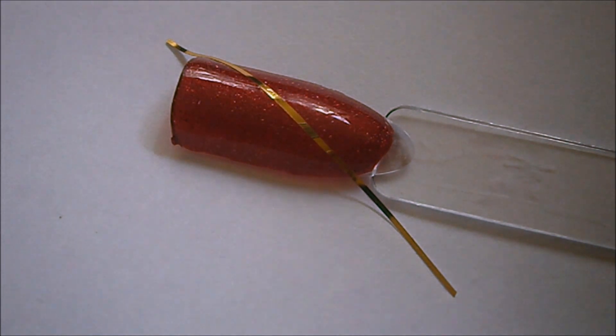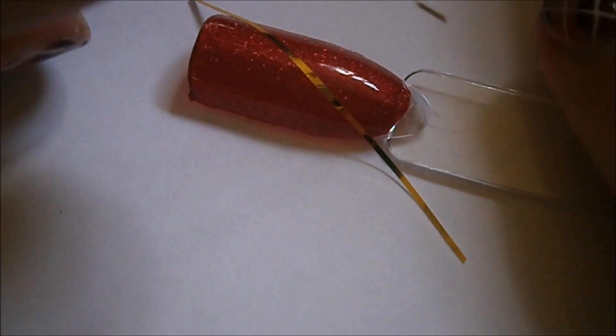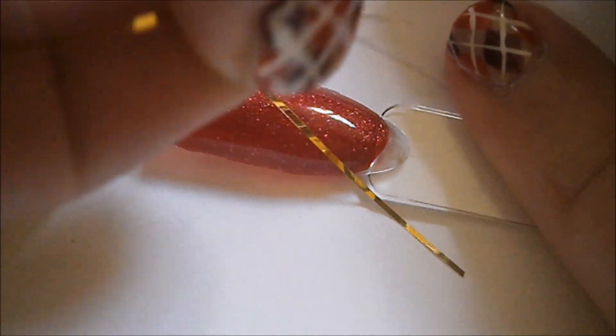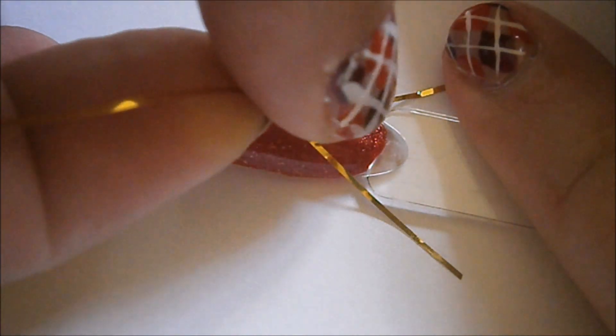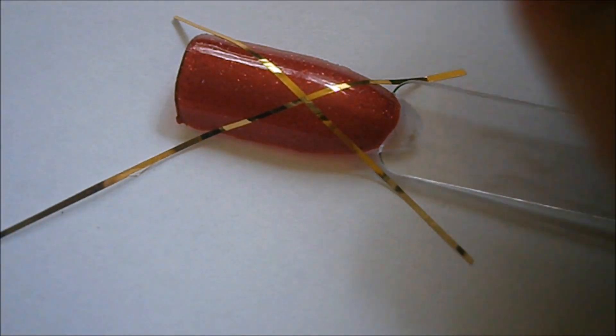A csíkokat először átlósan egy X alapban helyezem fel a körmeimre, majd pedig az átlók V betűjébe teszek még egy V betűt. Ez így elmondva lehet, hogy nem tűnik túl értelmesnek, de látjátok, hogy hogy fogom kialakítani.